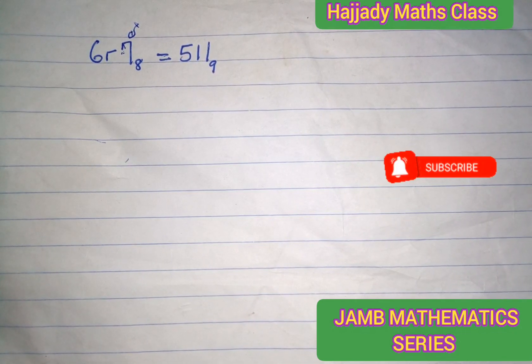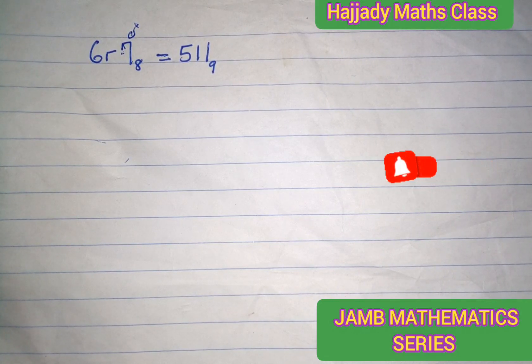Hello viewers, welcome to Hajjady Maths Class. Today we continue with our JAMB series. This is question number 1. Here we have 6R7 into base 8 equals 511 into base 9.